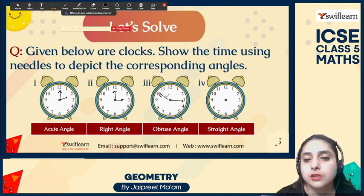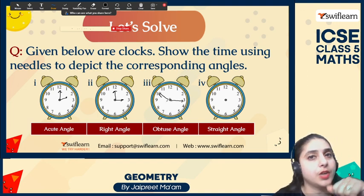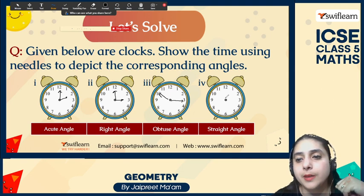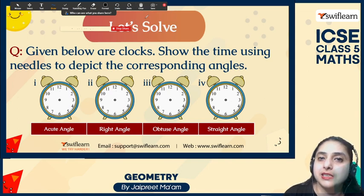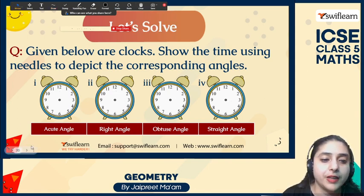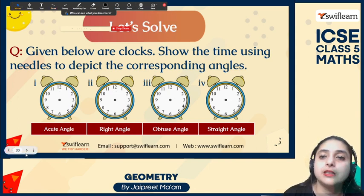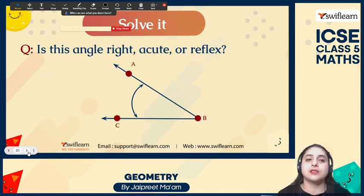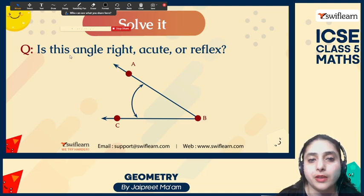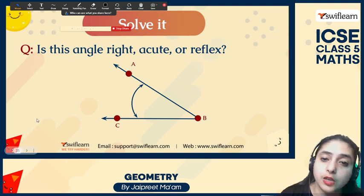An obtuse angle will be greater than 90 degrees, and a straight angle will have the hands directly opposite each other. Using the clock needles we can depict all the corresponding angles. This angle — where the face is open from the left-hand side — is an acute angle.